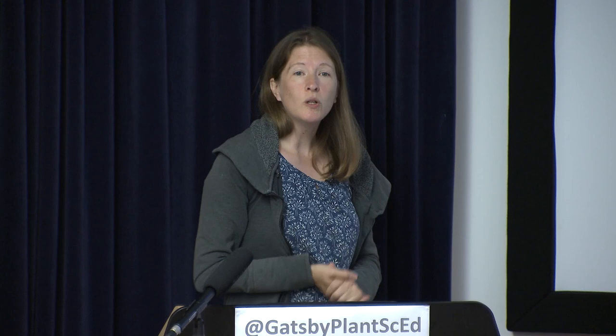To study iridescence, first you need to grow the plants, awkward as they are, and then you need to image the colour. This hopefully gives you an idea of how vivid the iridescence can be. Usually you think of plants as green, but some of these plants, such as Selaginella wildenowii, can be intensely metallic blue if you look at them from the right angle — quite a vivid, intense colour.